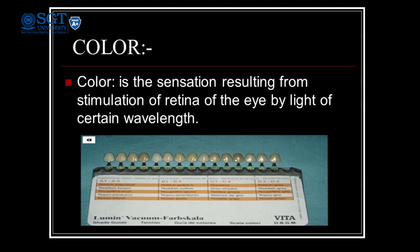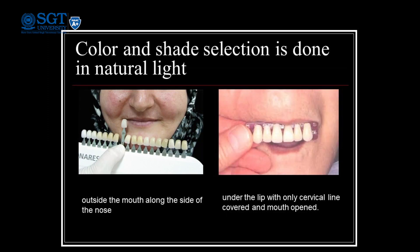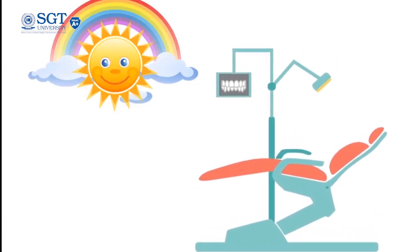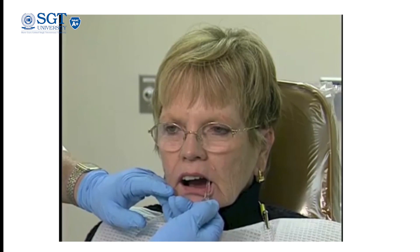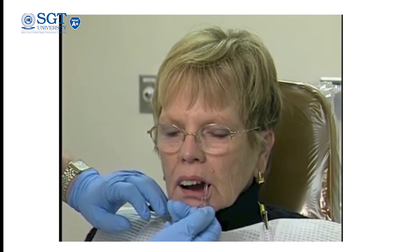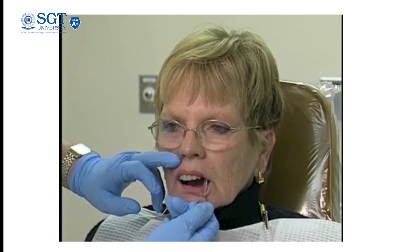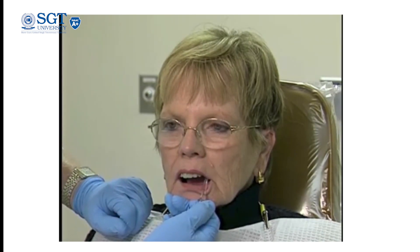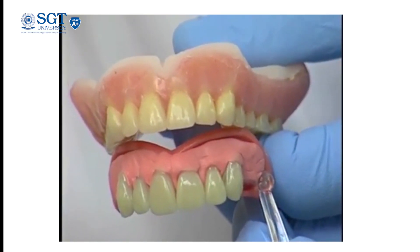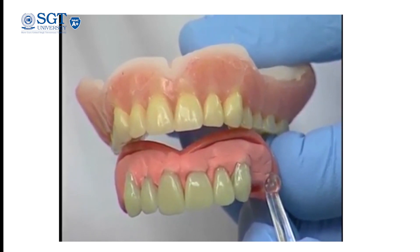Color is the sensation resulting from stimulation of the retina of the eye by light of certain wavelengths. Color and shade selection can be done in natural light, or if not possible, in artificial light of 5500 Kelvin temperature. For an edentulous patient, factors like skin color, hair color, and eye color are considered. Reference points on the face that can be used to select the color include the side of the nose, under the lips with only the incisal edge exposed, and under the lip with mouth open with only the cervical area visible. If previous dentures are available, the color, size, and form of the new teeth can be matched with them. I hope this video has cleared all your doubts regarding anterior teeth arrangement and you will be more confident next time. Stay tuned for my next presentation on posterior teeth arrangement. Thank you, stay safe and have a nice day.